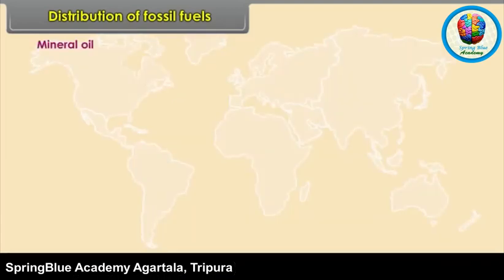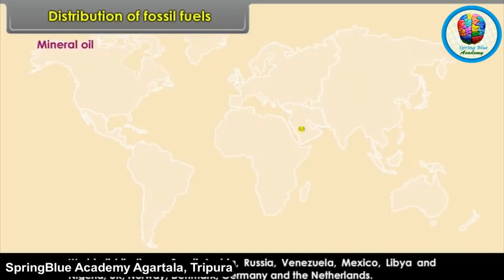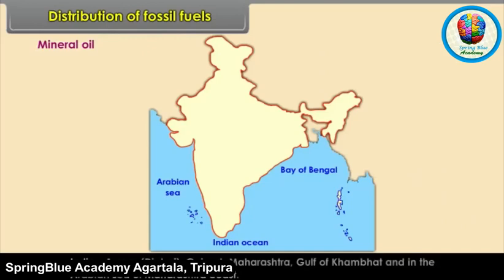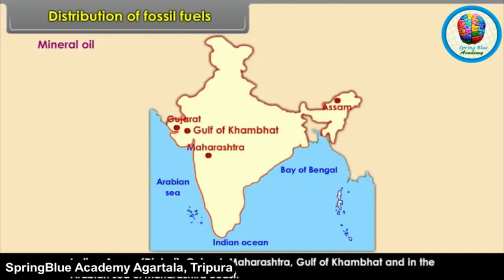Mineral Oil - World Distribution: Major producers are Saudi Arabia, Russia, Venezuela, Mexico, Libya, Nigeria, UK, Norway, Denmark, Germany and the Netherlands. In India, mineral oil is found in Assam (Digboi), Gujarat, Maharashtra, the Gulf of Khambhat and in the Arabian Sea off the Maharashtra coast.